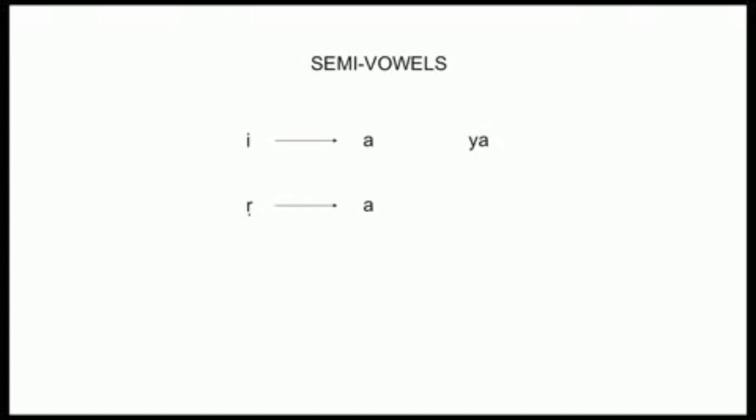Similarly, r to a gives us r. L to a gives us l. And finally, u to a gives us v, which is sometimes pronounced by rounding the lips as in swami. So, the semi-vowels are y, r, l, v. Very easy to pronounce.